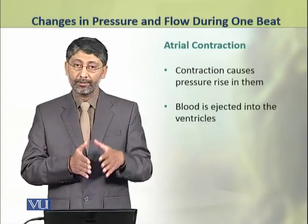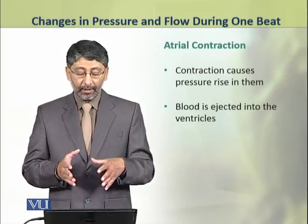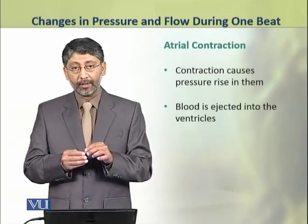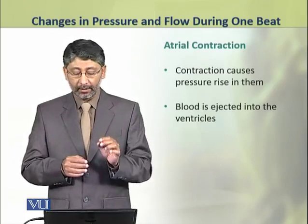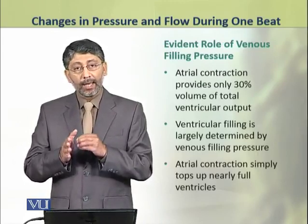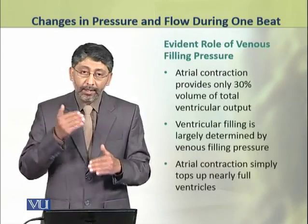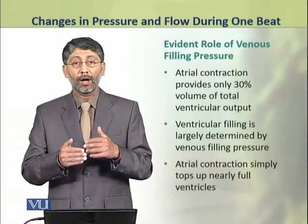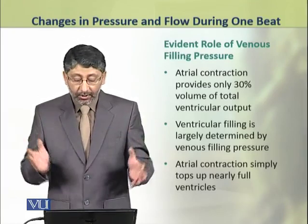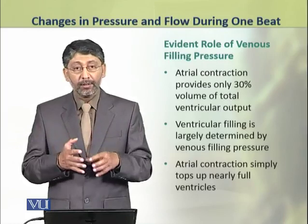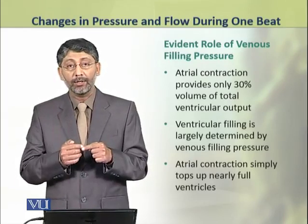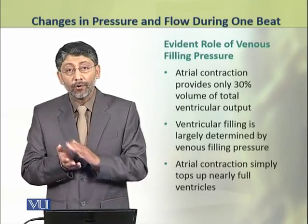The next phase is atrial contraction. When atria contract, pressure rises in them, and as a result, blood is ejected or flows into the ventricles. The atrial contraction provides only 30% of the total ventricular volume. The ventricles are mostly filled by venous filling pressure during diastole, so atrial contraction simply tops up the nearly full ventricles.